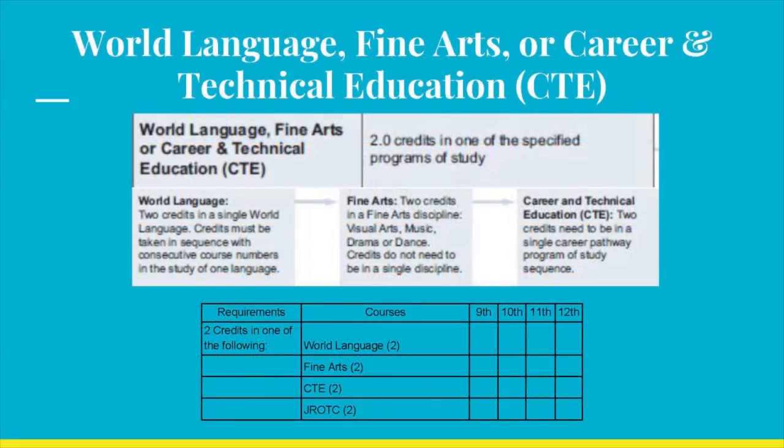In this next category, you must earn two credits in any one of the following categories: World Language, Fine Arts, or Career and Technical Education, otherwise known as CTE. In World Language, two credits in a single World Language must be earned. Credits must be taken in a sequence with consecutive course numbers in the study of one language — for example, earning credits in Spanish 1 and Spanish 2, not Spanish 1 and Japanese 1.